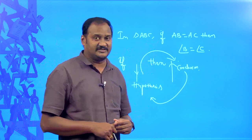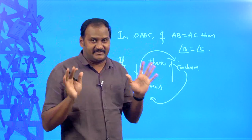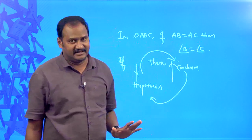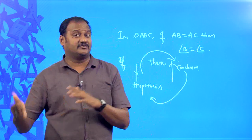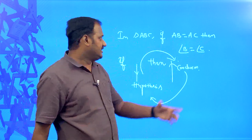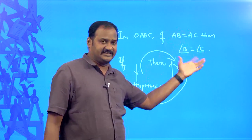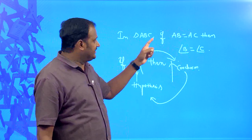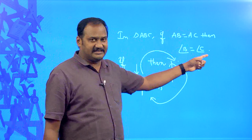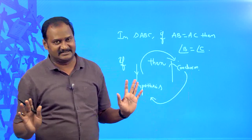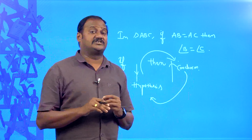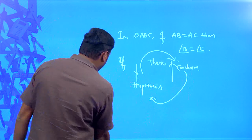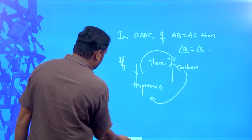Can you tell me what is the converse of the given statement? The statement given is: in triangle ABC, if AB equal to AC, then angle B equal to angle C. Now I am going to write hypothesis as conclusion and conclusion as hypothesis. So just put angle B equal to angle C in the hypothesis and AB equal to AC as conclusion. The converse will be: in triangle ABC, if angle B equal to angle C, then AB is equal to AC. That is what is called the converse of the given statement. Like that, I am going to introduce what is the converse of our basic proportionality theorem.